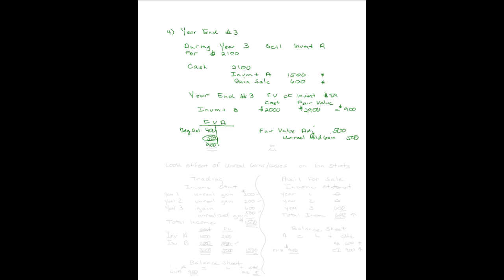The fair value account is unaffected by sales and purchases — it's never adjusted other than at year-end. At year-end, you simply look at what it is and take it to what you need it to be. It can be an increase or decrease, positive or negative. I've accomplished my first objective: showing how to account for the fair value account over more than one year.